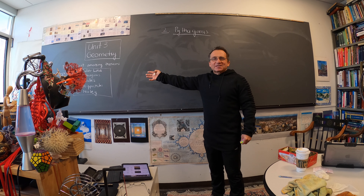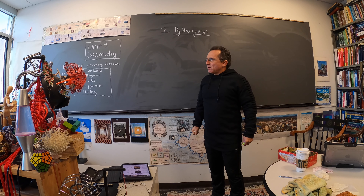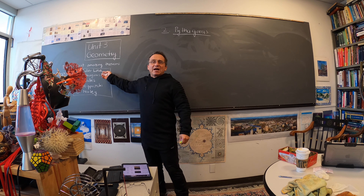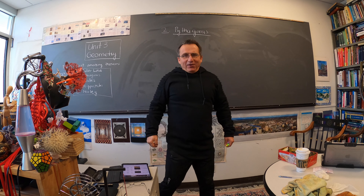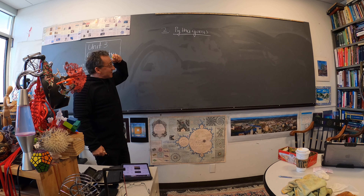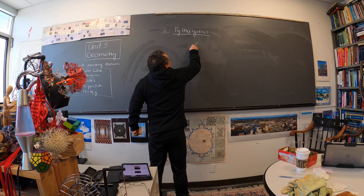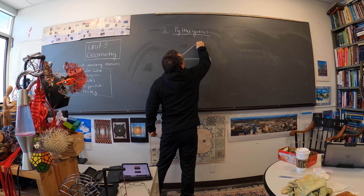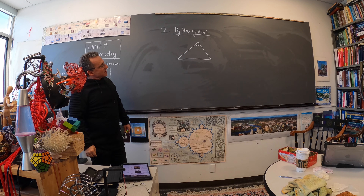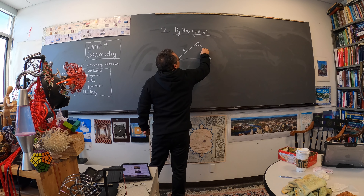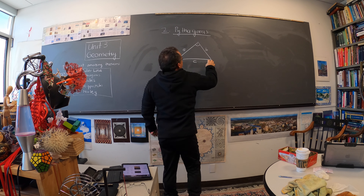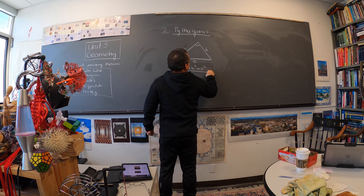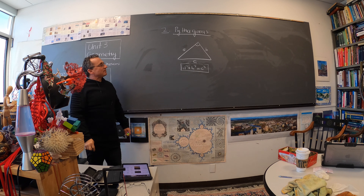The second theorem is the Pythagorean theorem, probably the most important theorem in mathematics — definitely one of the most important, usually ranked even higher than the Euler line. We have a right angle triangle — that's the key assumption — with sides a, b, and c. The theorem is that a squared plus b squared is equal to c squared. Let me describe it and give one proof — there are many, many proofs.